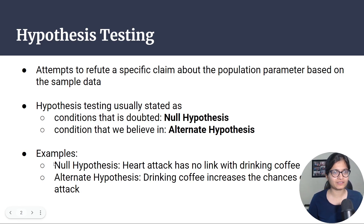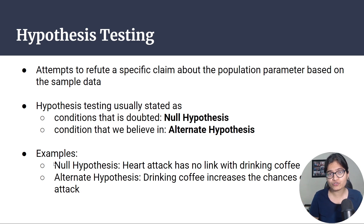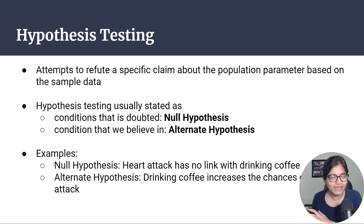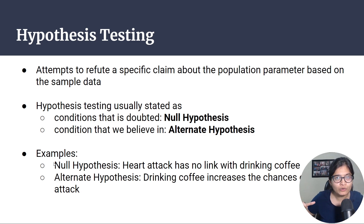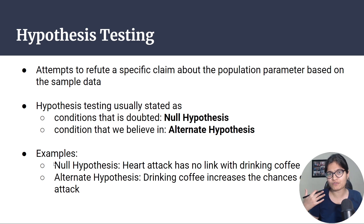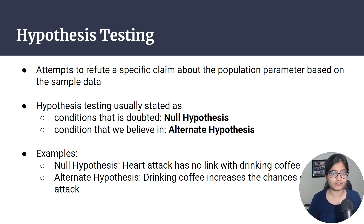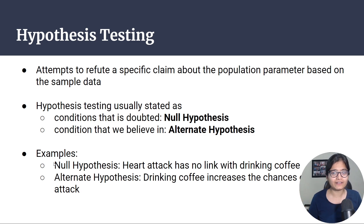Whenever we talk about hypothesis testing, the simple meaning is that we are making some assumptions. Whenever we do experiments with respect to some sample, we take a subset of the population, do some experiments, get some conclusions, and those conclusions from the sample data we usually apply to the population data as well. Now when talking about hypothesis, it is basically composed of two parts: null hypothesis or alternate hypothesis. Our real target is to refuse a specific claim about the population parameter, which is based on the sample data.